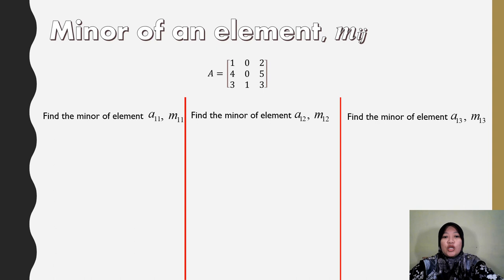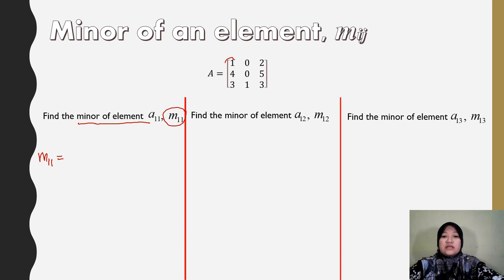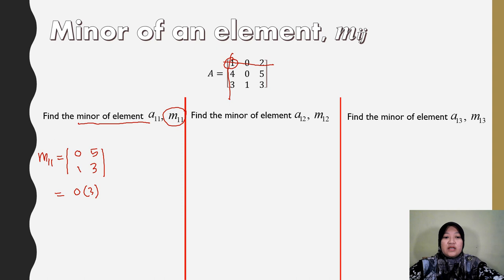We have matrix A = [1, 0, 2; 4, 0, 5; 3, 1, 3]. Find the minor of element A_11, which is M_11. We delete the first row and first column, then put the remaining elements inside the determinant: [0, 5; 1, 3]. Cross multiply: 0 times 3 minus 5 times 1 equals negative 5.